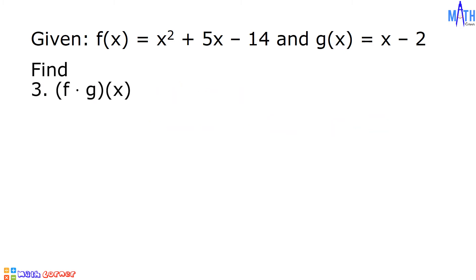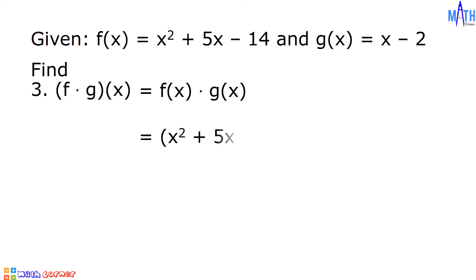Number 3: quantity f times g of x. It is equal to f of x times g of x: x squared plus 5x minus 14, times quantity x minus 2. Let us use the distributive property.